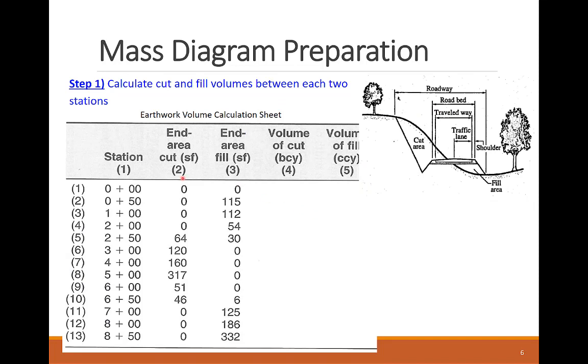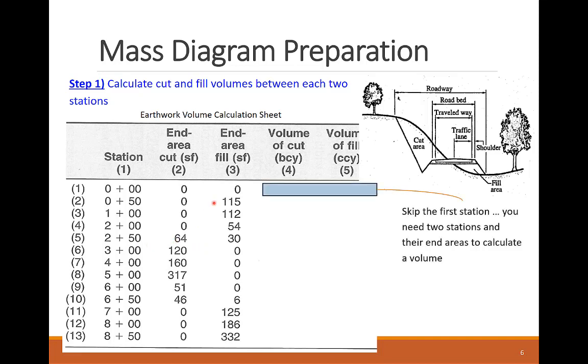The first step is to calculate the cut and fill volumes between each pair of successive stations using the end area calculations. As you can see in this cross-section view, you can have both cut and fill areas in a single station, like in the fifth station, 2 plus 50. Also, from the last lesson, we'll have to skip the first volume calculation for the first station, as we need two stations for the end area calculation.